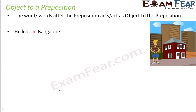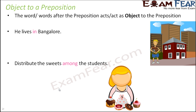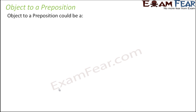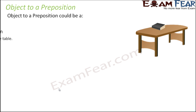The next example is: 'Distribute the sweets among the students.' Here, 'among' is the preposition — more precisely, it is a compound preposition. The words after the preposition form the object, so 'the students' is the object in this sentence.